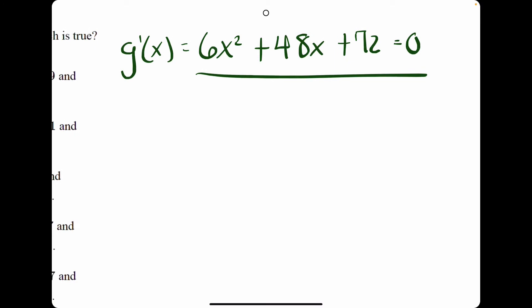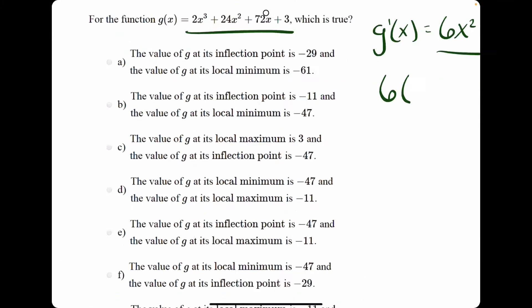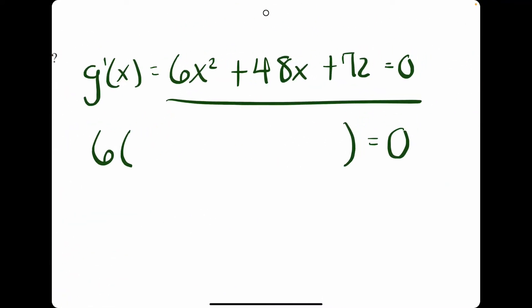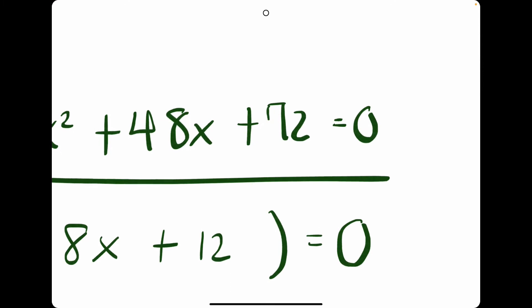We can always factor out a 6 in this format of a problem. We can always factor out a 6 from the first derivative, leaving us with x squared plus 8x plus 12. 48 divided by 6 is 8, 72 divided by 6 is 12.